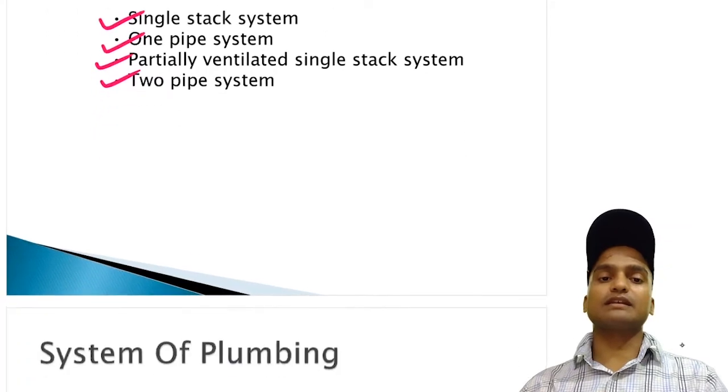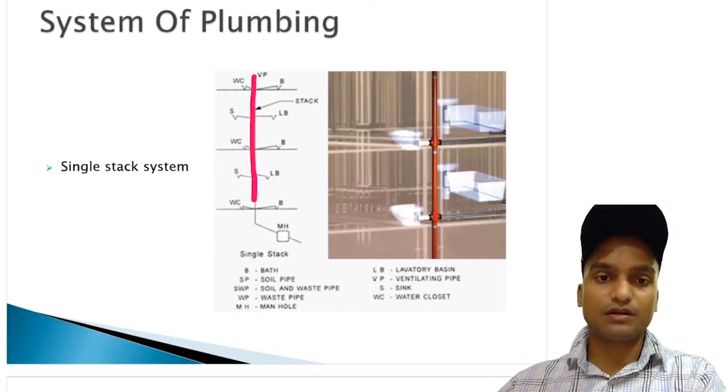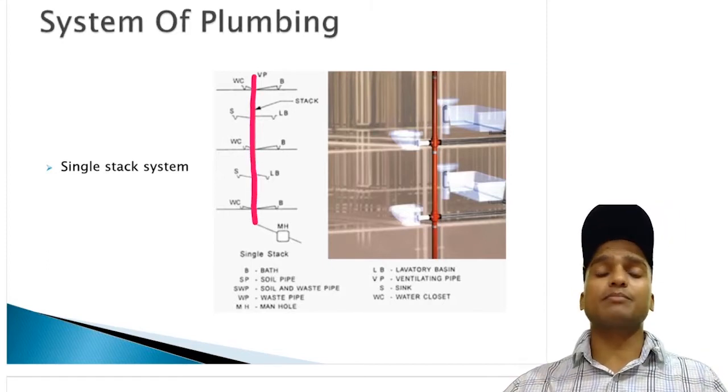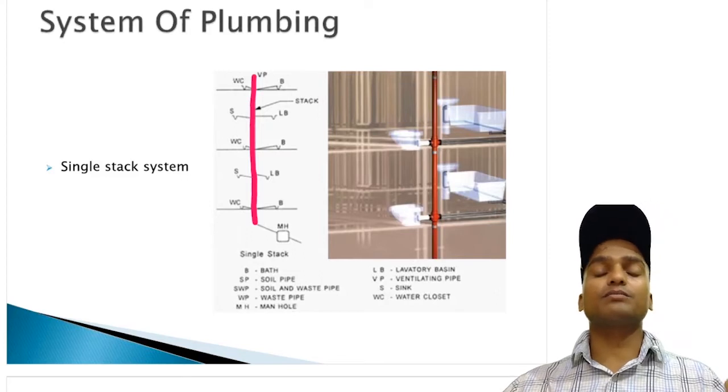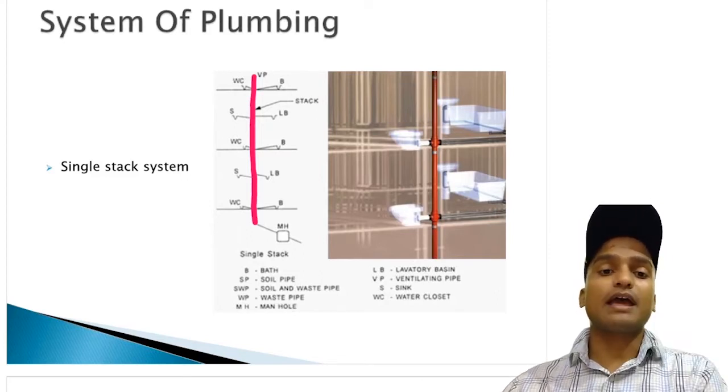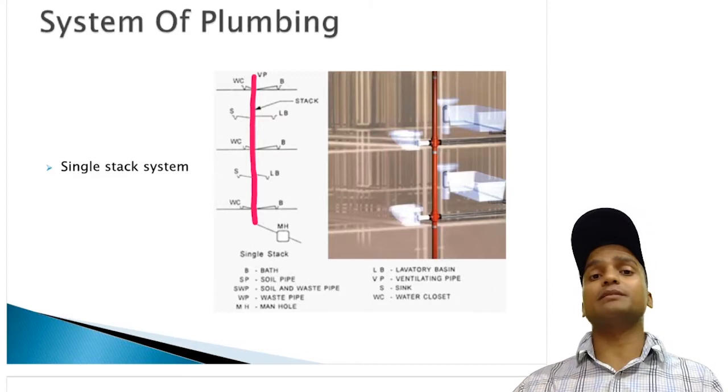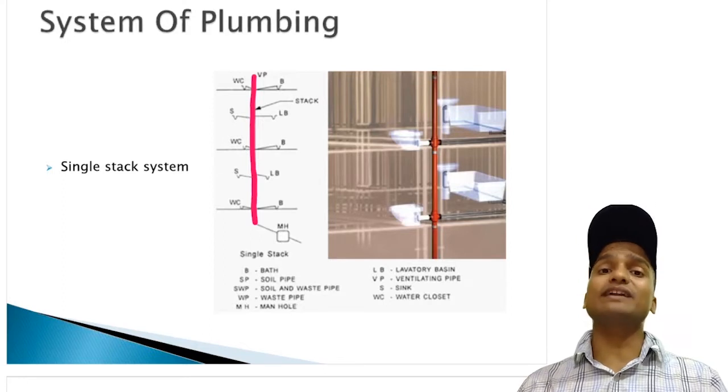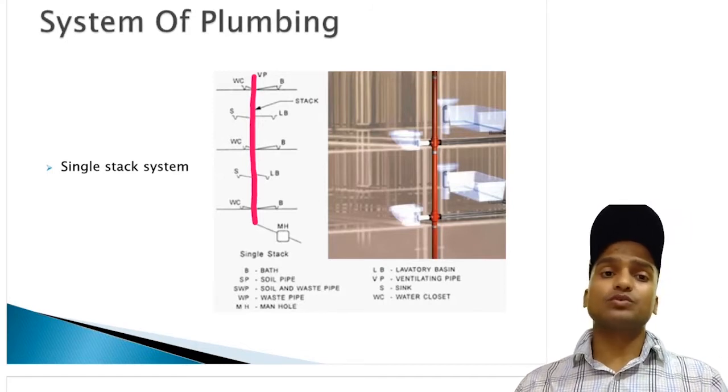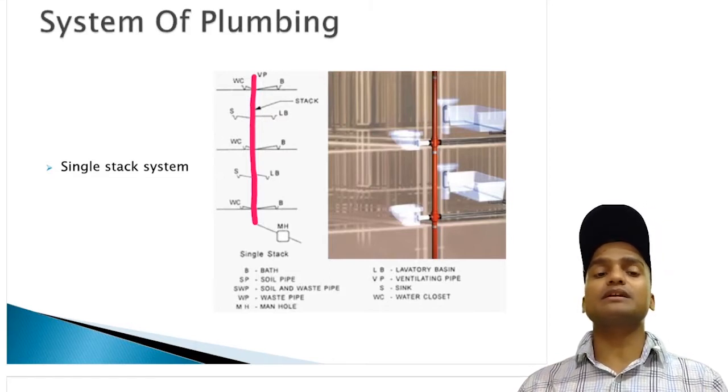Let us discuss first of all single stack system. If you can see this vertical pipe from the roof to the ground floor, this is the only single pipe which we are going to use in this single stack system. This pipe is running vertically from the terrace to the ground floor and this single pipe is receiving everything whether it be the black water or whether it be the soil water and this same vertical pipe is going to act as a ventilating pipe.